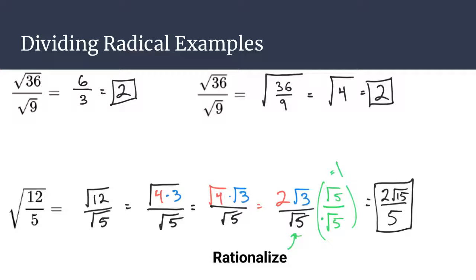So that covers a couple different types of simplification. Nothing reduces with 12 over 5, so you simplify them each individually since the top one does simplify. And you need to rationalize the denominator to end up with your final answer.